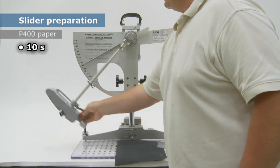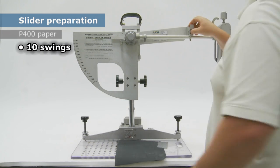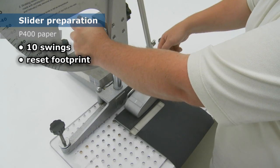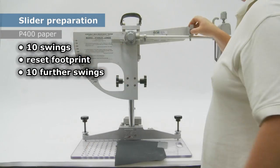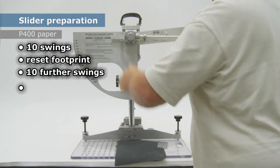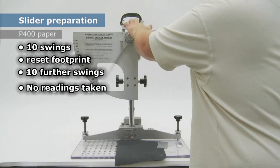Carry out ten swings across the P400 paper, followed by resetting the footprint and ten further swings. We are not interested in the readings obtained at this stage.